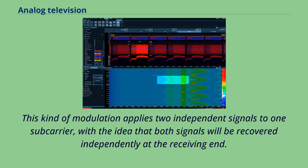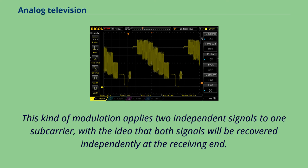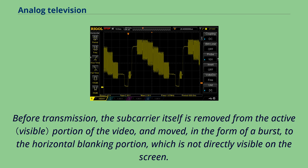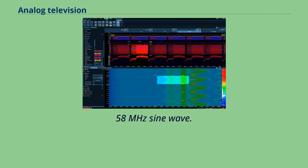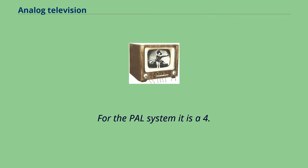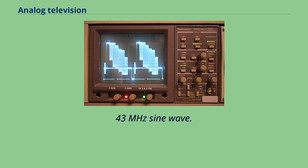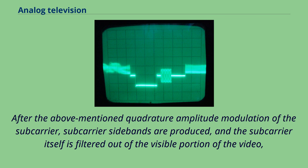For NTSC, the subcarrier is a 3.58 MHz sine wave. For the PAL system it is a 4.43 MHz sine wave. After the quadrature amplitude modulation of the subcarrier, subcarrier sidebands are produced, and the subcarrier itself is filtered out of the visible portion of the video. The resulting subcarrier sidebands are also known as chroma or chrominance.